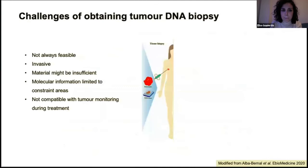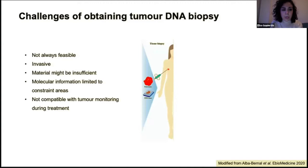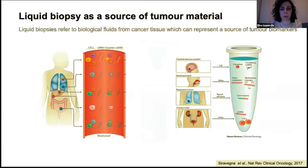To perform molecular analysis, we need tumor material to extract DNA and RNA. Although obtaining tumor tissue at diagnosis is routine for most pediatric solid tumors, this is not always possible — for instance, tumors within the brainstem are challenging to biopsy, and renal tumors are not biopsied due to risk of tumor rupture. Biopsies can be very invasive, material may not be sufficient, and as tumors are highly heterogeneous, molecular information is limited to the biopsied area. Using biopsy to monitor tumors during treatment is also challenging and often not feasible. Therefore, liquid biopsy is a powerful tool as a source of tumor material.